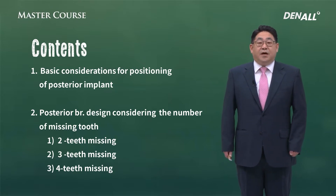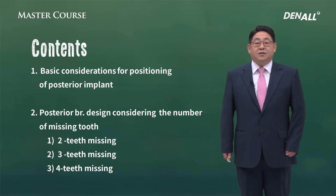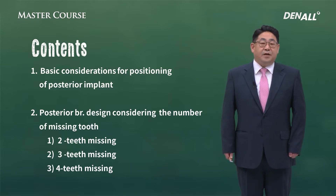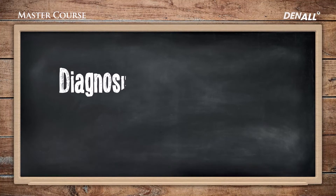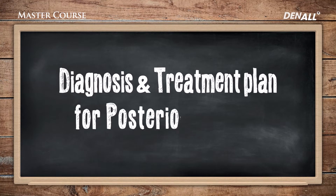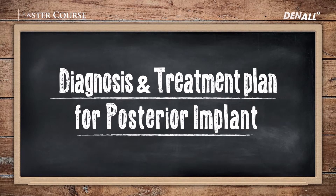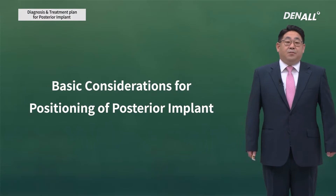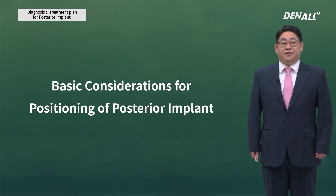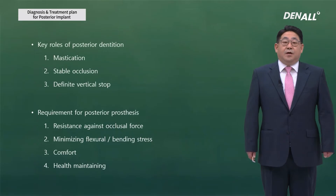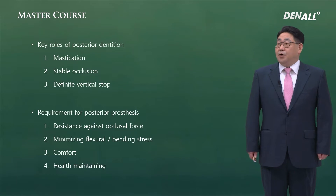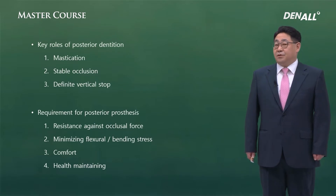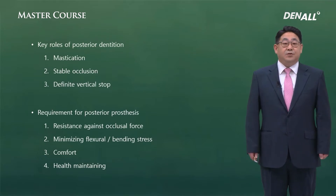The number of missing teeth and restoration — depending on how this is done, I'm going to talk about what requirements are needed. First, I'm going to talk about basic considerations for positioning of posterior implants. The first function that the posterior teeth serves is providing outstanding mastication, and after that, it maintains occlusal relation and occlusion.